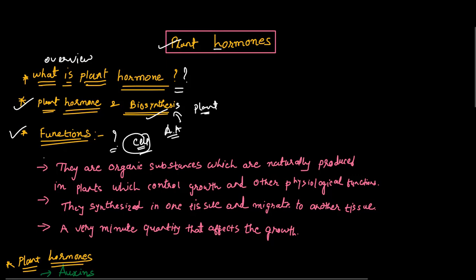So, what are plant hormones? Plant hormones are organic substances which are naturally produced in the plant and which control growth and other physiological functions. They are synthesized in one tissue and then migrated to another tissue, where even in mild quantities they affect the growth of the plant.